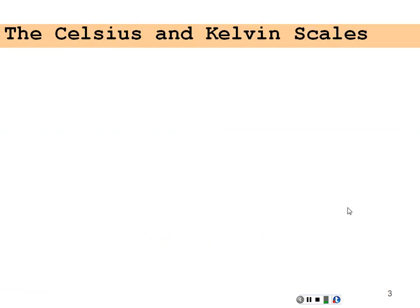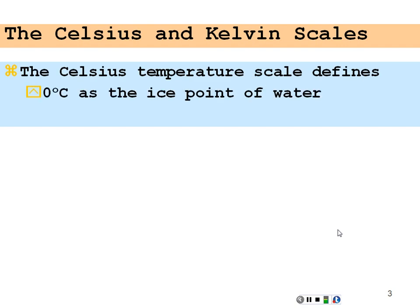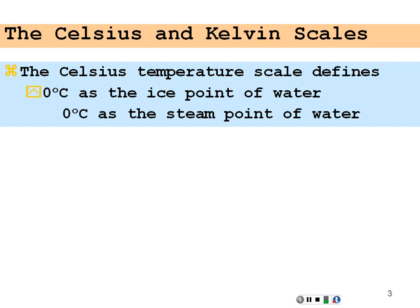Celsius and Kelvin scale — Celsius or centigrade scale, and the Kelvin scale. The Celsius temperature defines zero degrees as the ice point of water, the freezing point of water, where it goes through a phase change from liquid to solid and vice versa. And 100 degrees Celsius as the steam point of water, where it does the other phase change from liquid to gas and vice versa.